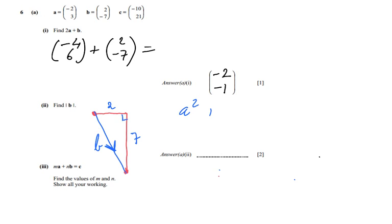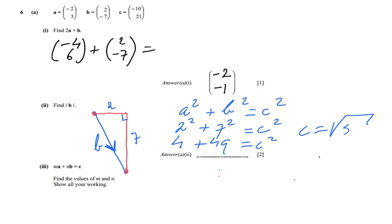A squared plus B squared equals C squared. We're looking for the hypotenuse, so C squared equals 2 squared plus 7 squared: 4 plus 49 equals C squared. So C is going to be the square root of 53. And then to three significant figures, please don't forget that, it's such a shame if you do because you lose points: 7.28. So that would be the magnitude of this vector.